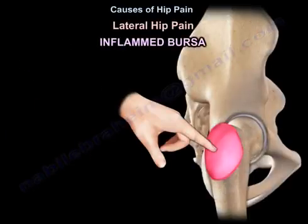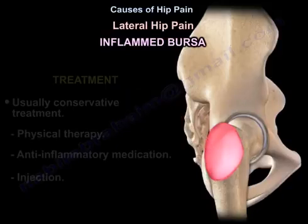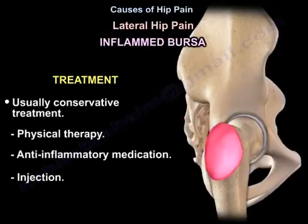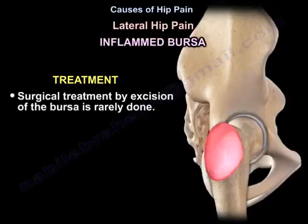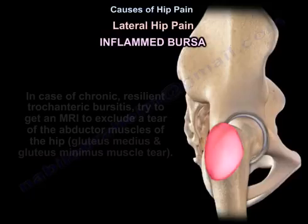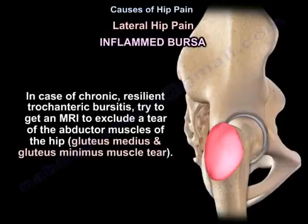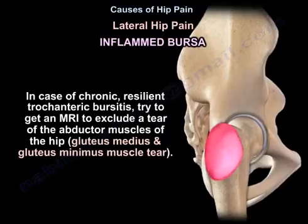Lateral hip pain is usually due to an inflamed bursa. Treatment is usually conservative with physiotherapy, anti-inflammatory medications, and injections. Surgical treatment by excision of the bursa is rarely done. In cases of chronic, resilient trochanteric bursitis, try to get an MRI to exclude a tear of the abductor muscles of the hip — the gluteus medius and gluteus minimus.